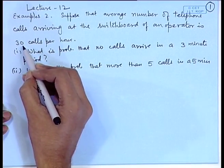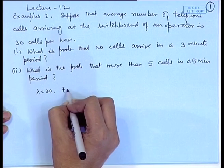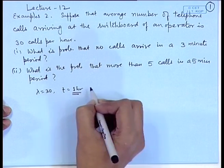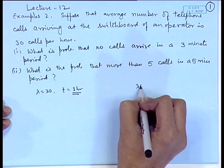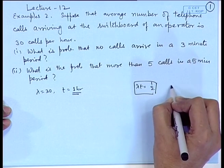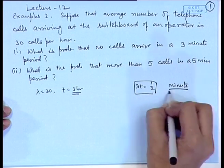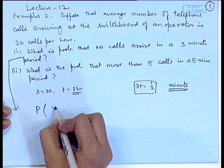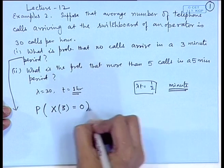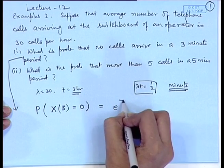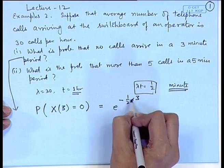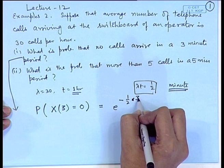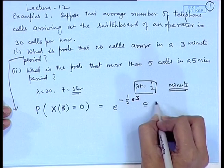Here, λ=30 and t=1 hour. If we consider the unit as minute, then in 1 minute λt = 1/2. So the probability of no calls in a 3-minute period is P(X₃=0) = e^(-(1/2)×3) = e^(-3/2), which is approximately 0.22. Here λ=1/2 and t=3.